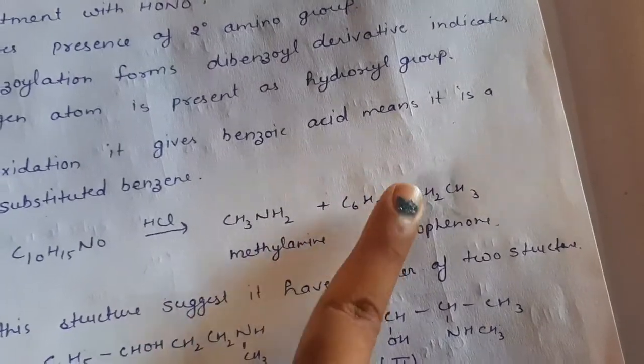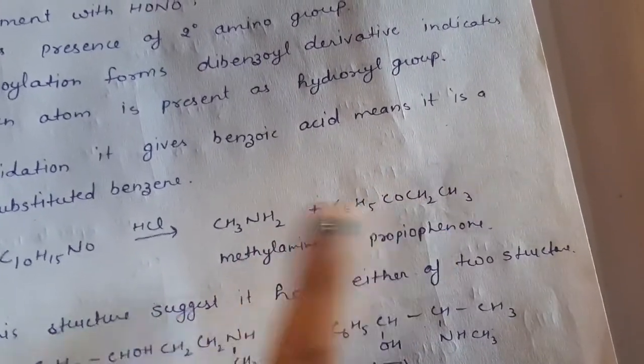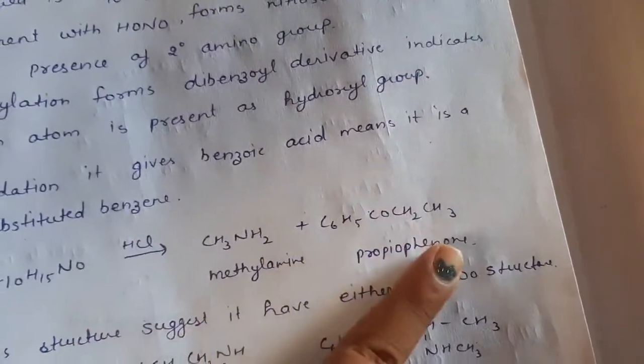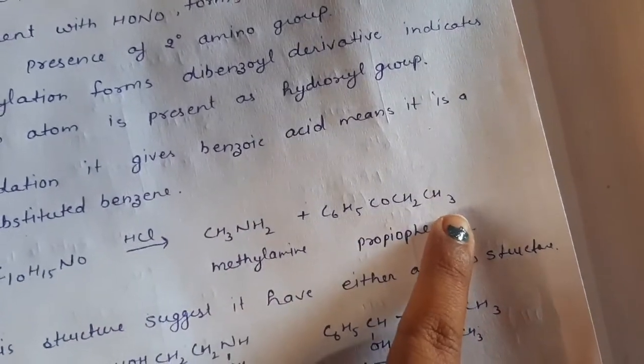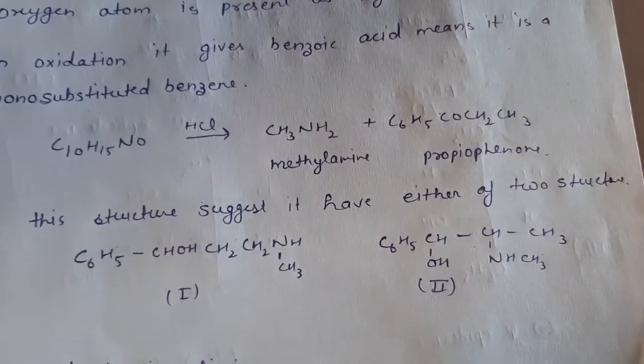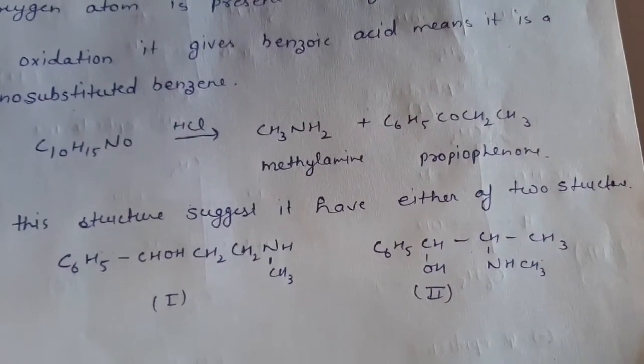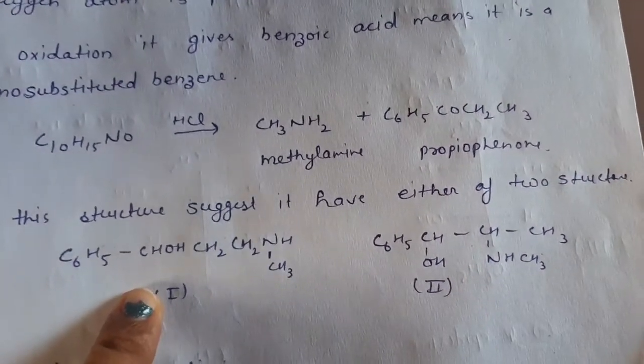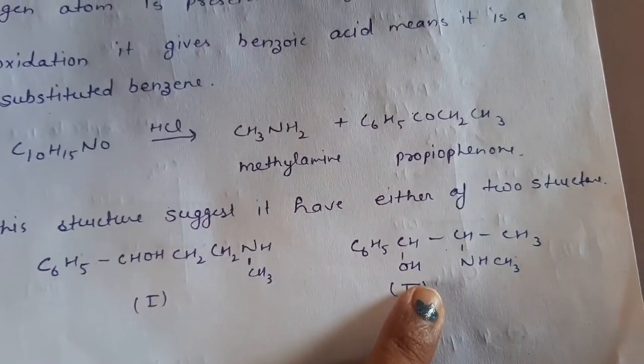So C6H5-CHOH. And now, linkage of this methylamine to these groups, it can be attached to first carbon or it can be attached to this carbon also. So we can say that ephedrine can have either this one structure or this structure.